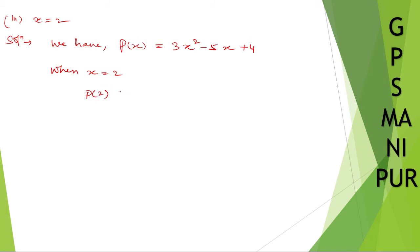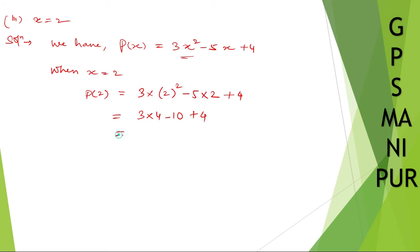p(2) is equal to 3 into 2² minus 5 into 2 plus 4. That is 3 into 4 minus 10 plus 4, which is 12 minus 10 plus 4. 12 minus 10 is 2, and 2 plus 4 is 6. The answer is 6.